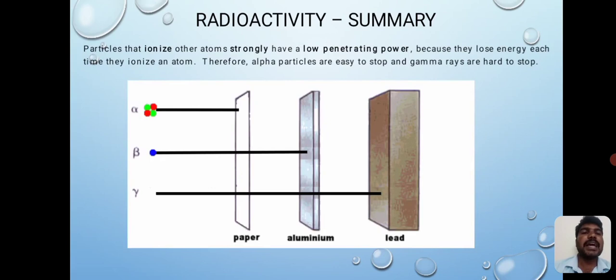Particles that ionize other atoms strongly have a low penetrating power because they lose energy each time they ionize an atom. Therefore, alpha particles are easy to stop and gamma rays are hard to stop.